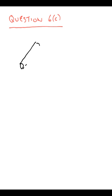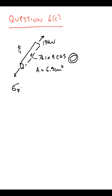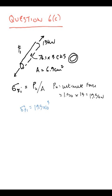Question 6c, we're going to look at the stresses in the first sloping strut for the 76 by 3 CHS with an area of 6.5 cm². So the stress is P over A.